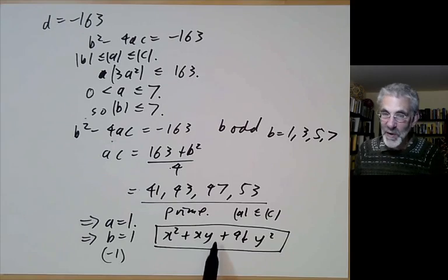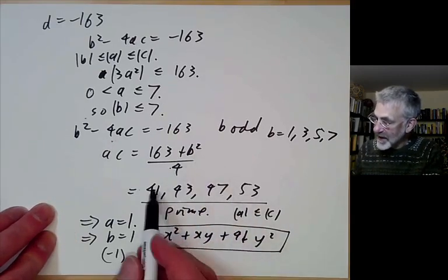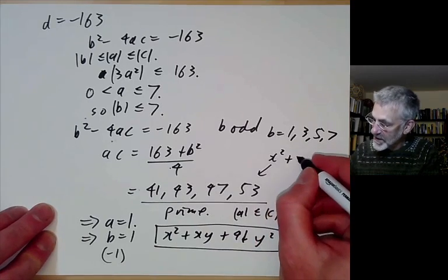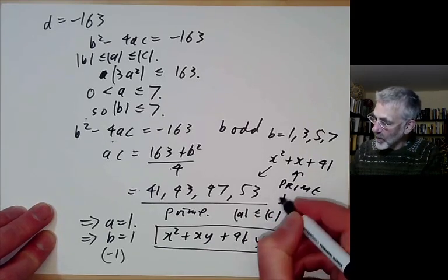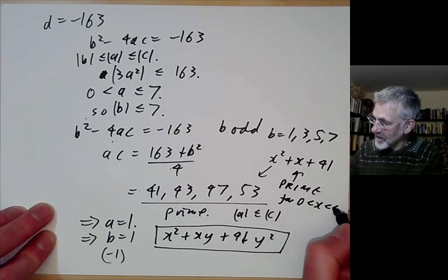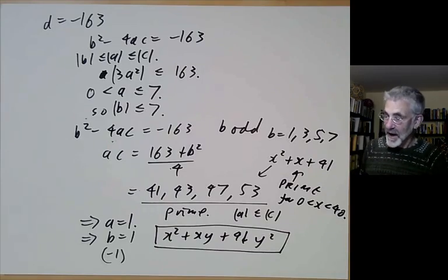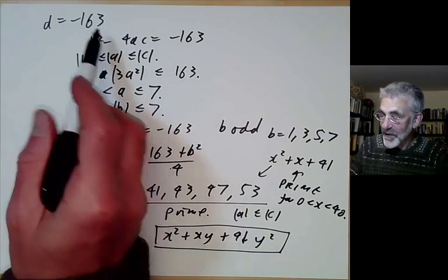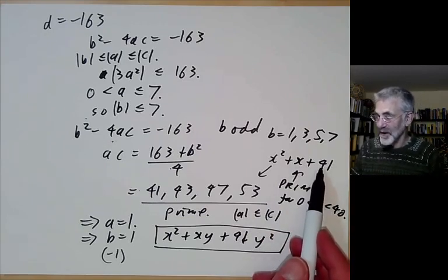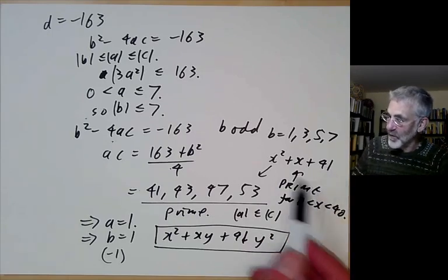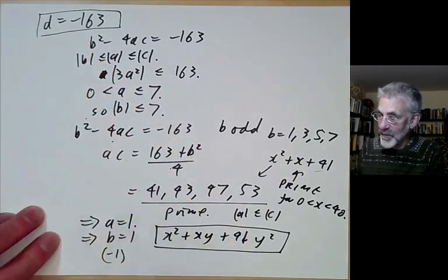We could work out which primes are represented by this form. Incidentally, the values 41, 43, 47, 53 are given by x² + x + 41 for small x with y = 1. In fact, x² + x + 41 turns out to be prime for all 0 ≤ x ≤ 40 — not just the first four cases, but the first 40. Whenever d is a discriminant with only one equivalence class, something similar happens: x² + x + (|d| + 1)/4 is prime for a large number of values.